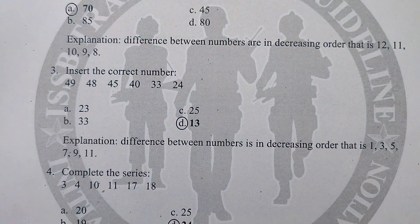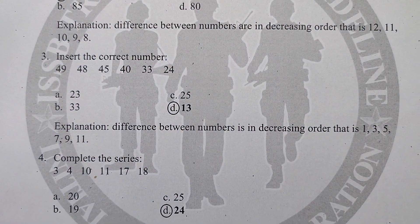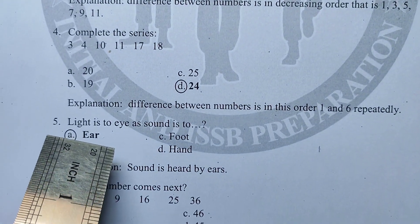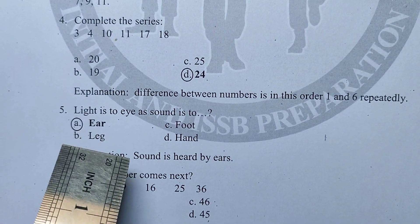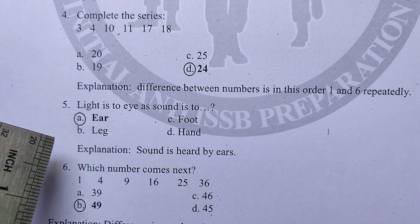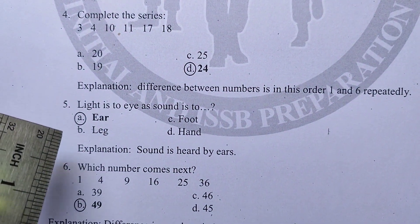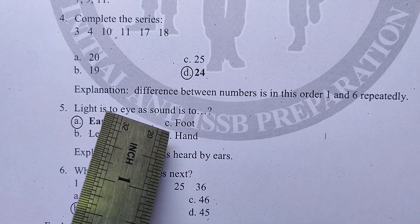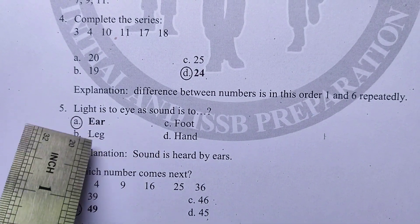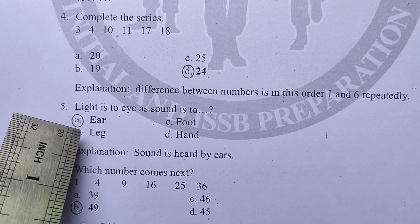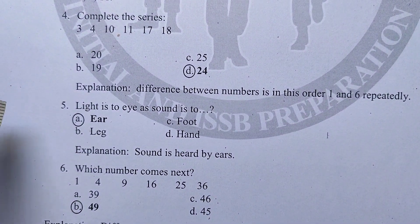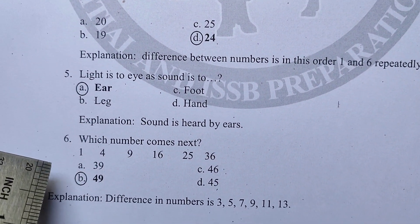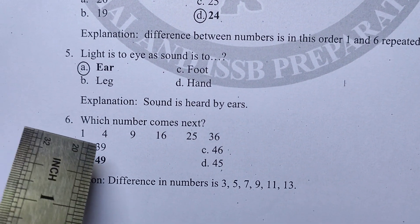Question number 5: light is to eye as sound is to what? Light is perceived by the eye. Similarly, sound is something we can hear — it enters through the ear. So the answer relates to hearing.